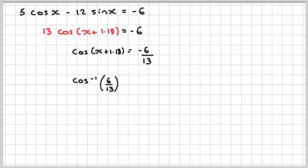Cos to the minus 1 of 6 over 13 will be equal to 1.091. Remember, I'll keep our calculator in radian mode.